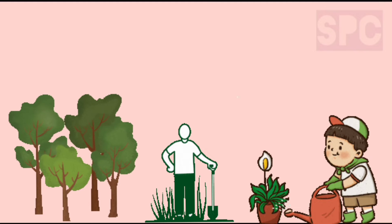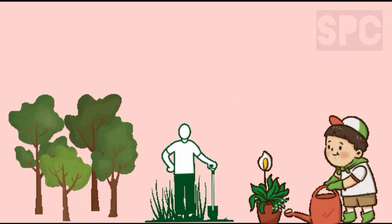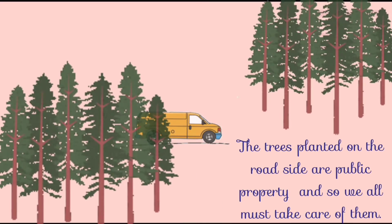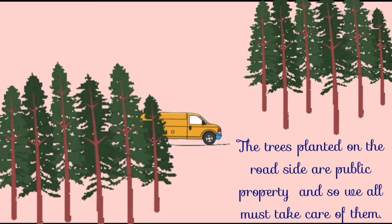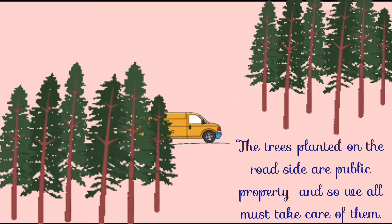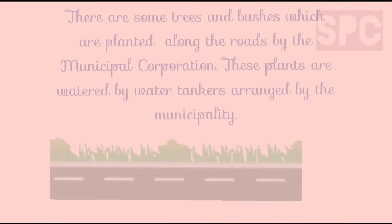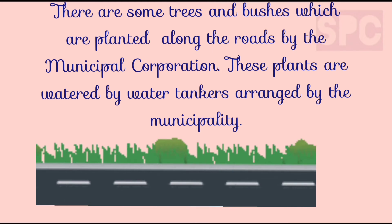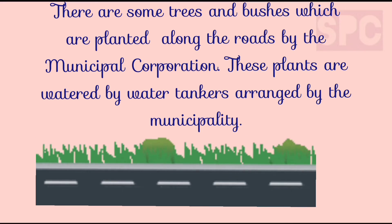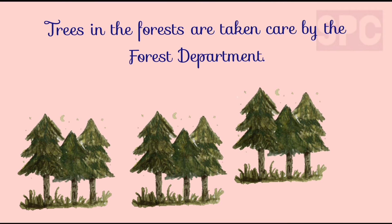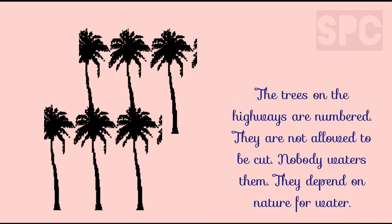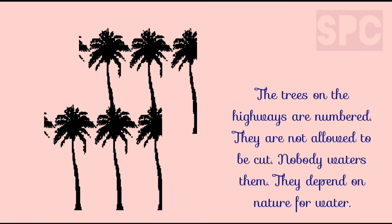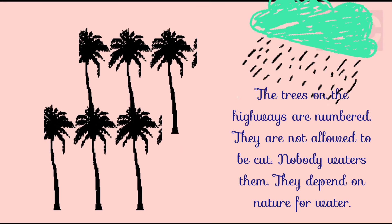Trees are grown everywhere. Some trees are grown by people on their own land and are their private property. They either take care of these trees themselves or hire a gardener. The trees planted on the roadside are public property, and we all must take care of these trees. Some trees and bushes are planted along the roads by the municipal corporation and are watered by water tankers. Trees in the forest are taken care of by the forest department. The trees on highways are numbered and are not allowed to be cut. They depend on nature for water.